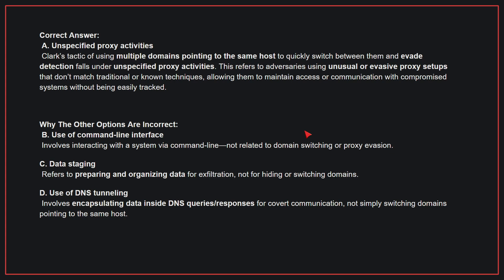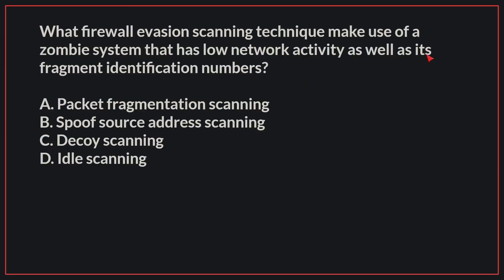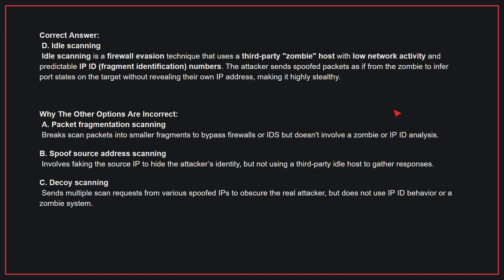Therefore, the correct answer is A. What firewall evasion scanning technique makes use of a zombie system that has low network activity as well as its fragment identification numbers? The correct answer is D, idle scanning. Idle scanning is a firewall evasion technique that uses a third-party zombie host with low network activity and predictable IP ID numbers. The attacker sends spoofed packets as if from the zombie to infer port states on the target without revealing their own IP address, making it highly stealthy.